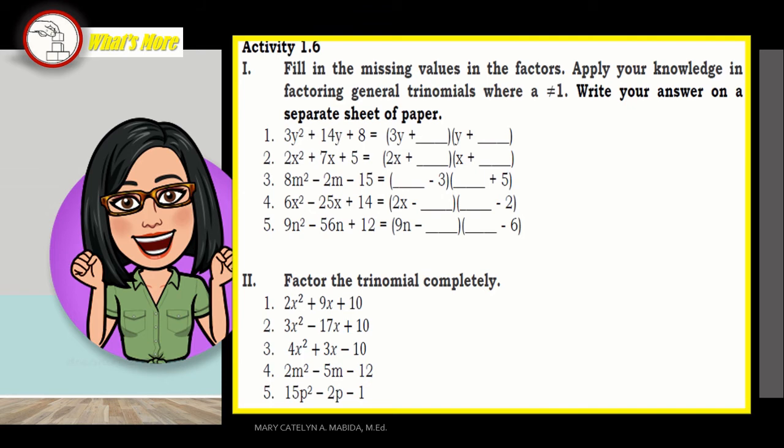Number 2: 2x squared plus 7x plus 5. Number 3: 8m squared minus 2m minus 15. Number 4: 6x squared minus 25x plus 14. Number 5: 9n squared minus 56n plus 12. And then our set 2: You are going to factor the trinomials completely.